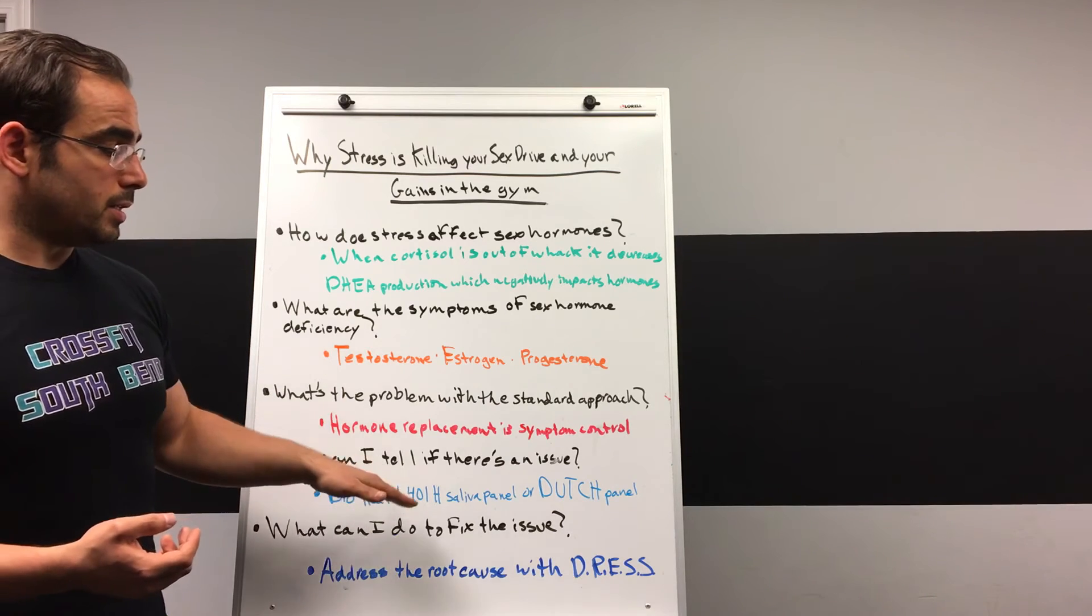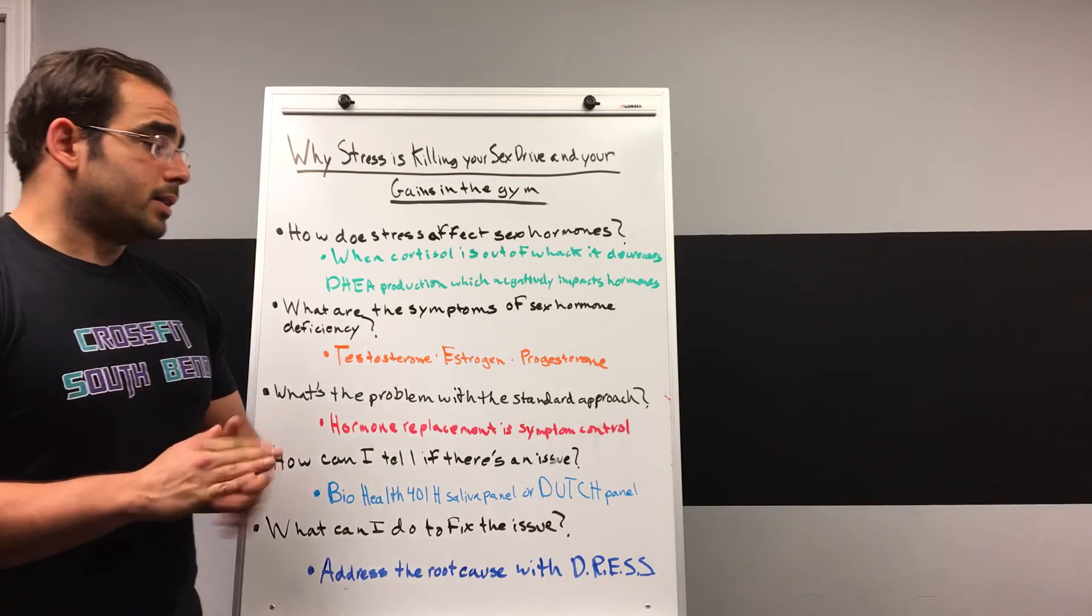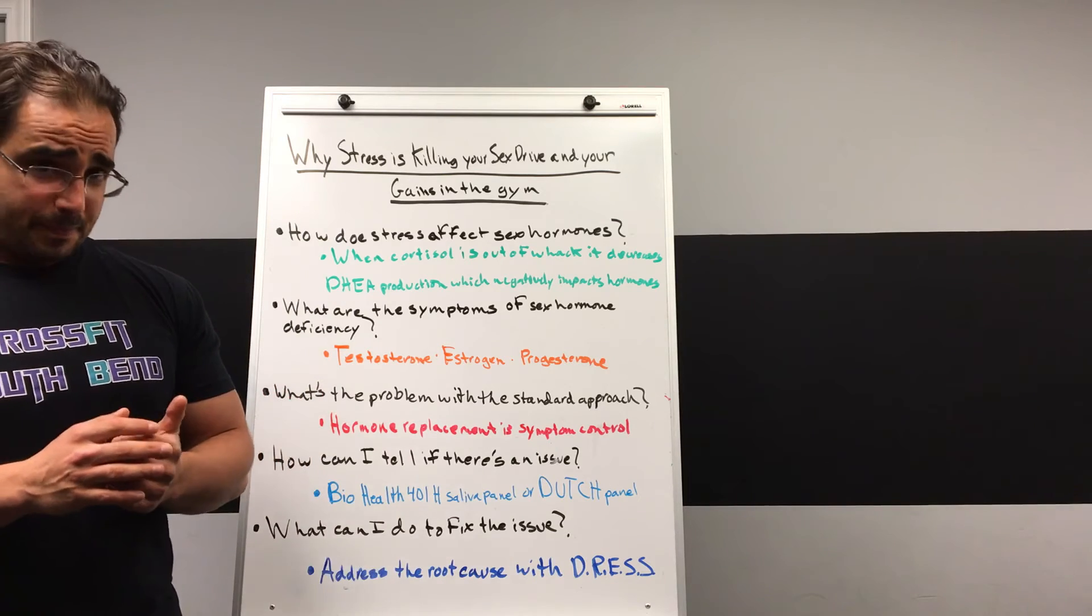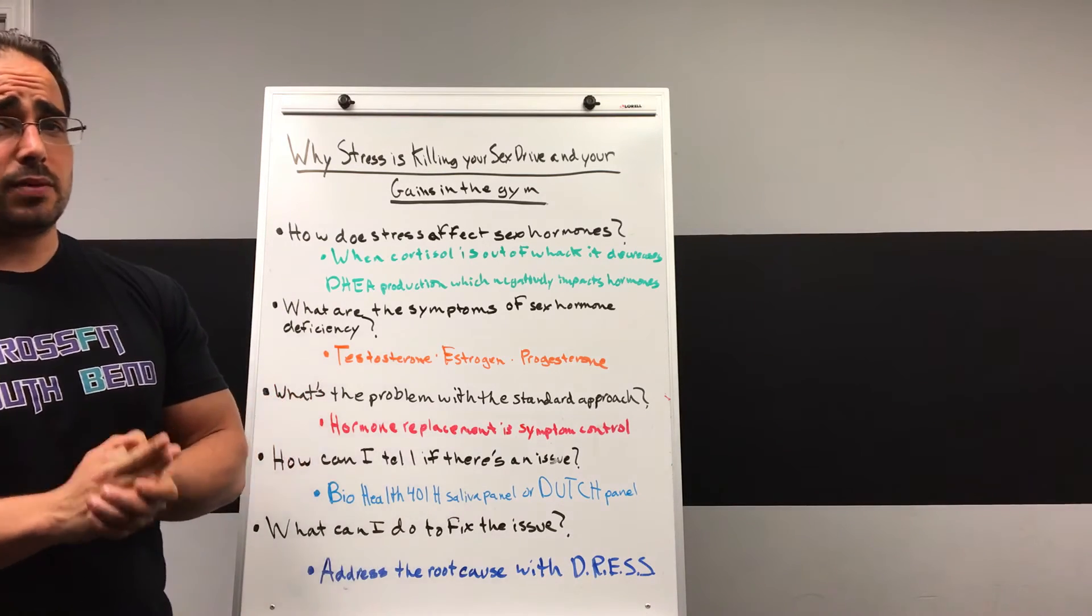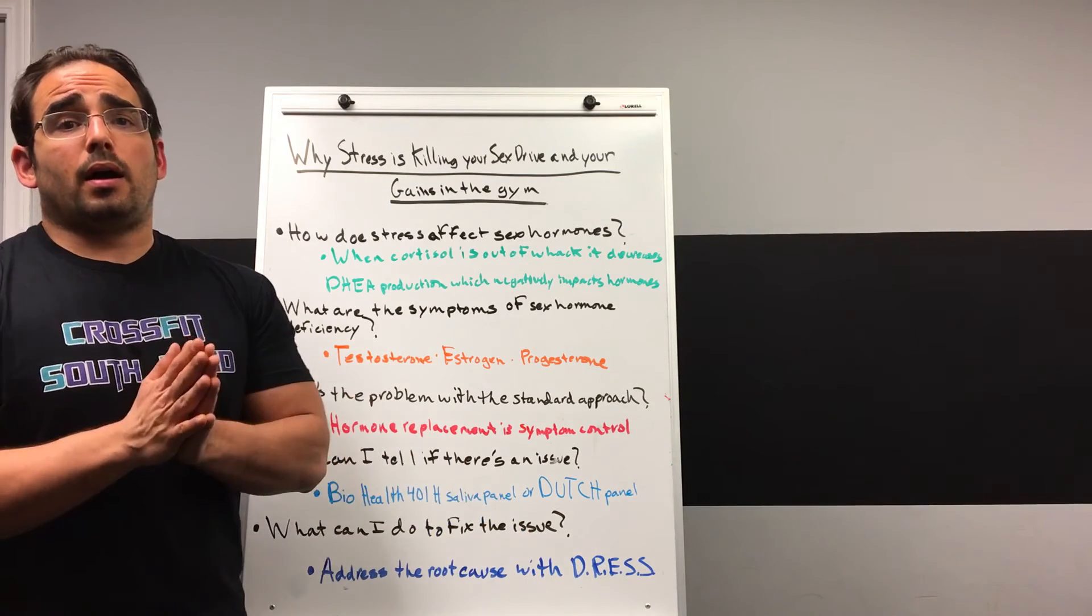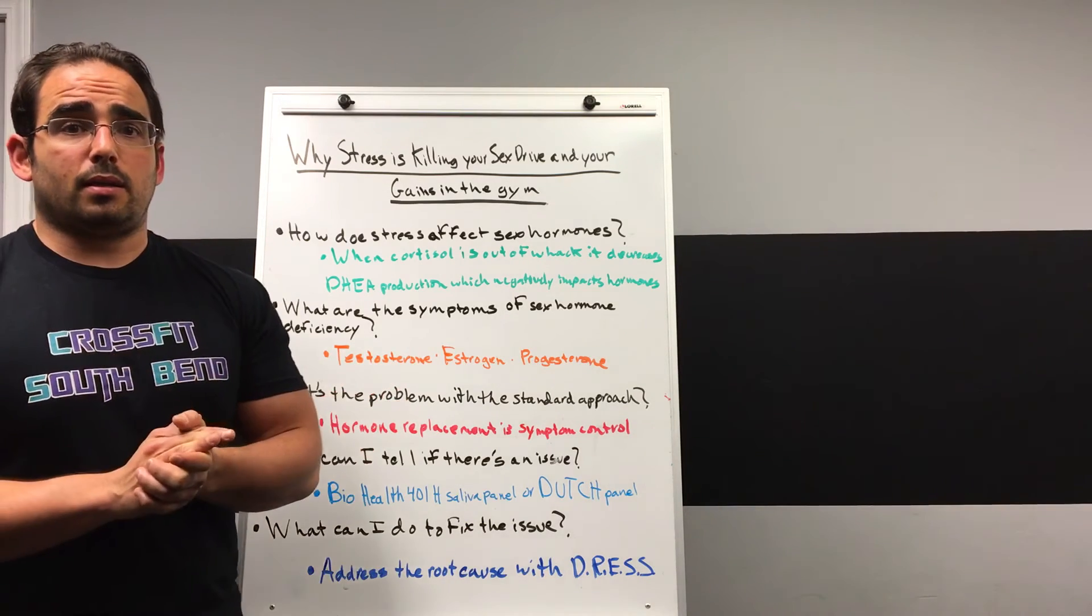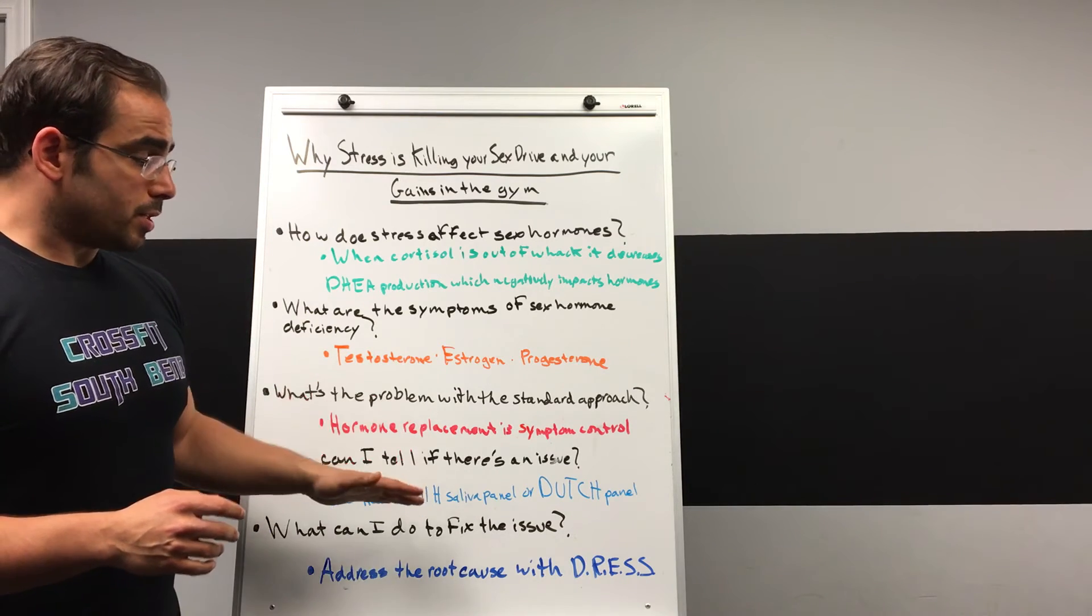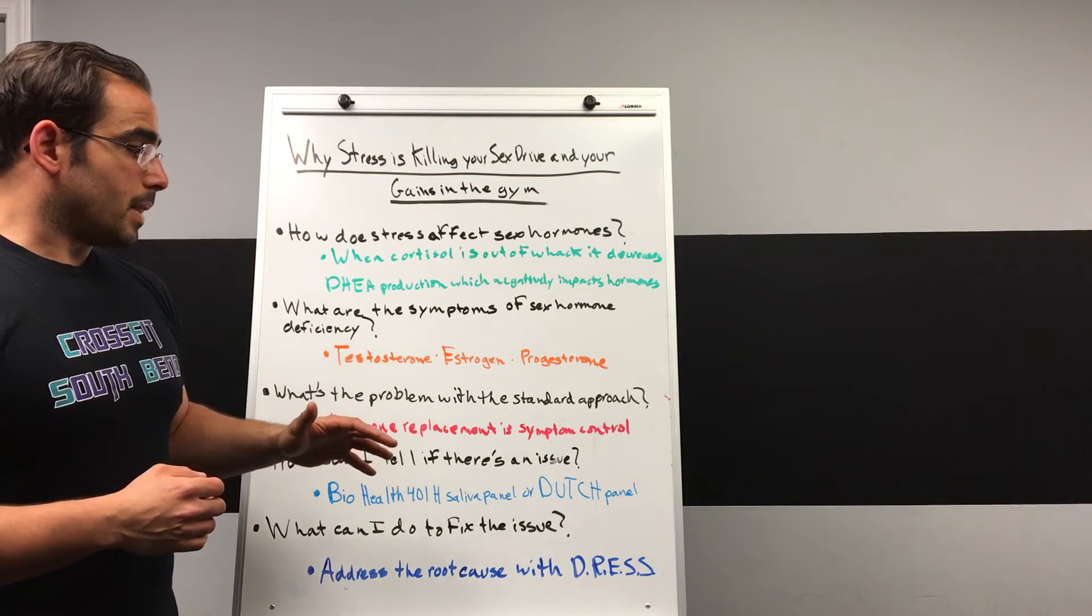The BioHealth is a very good test to run. It's just saliva-based. It's not terribly expensive. The Dutch Panel is a much, much better test to run. It's got a little bit more complicated information in it, but it gives you a much better sense of what's actually going on with the hormones. We can run both of these tests here through our Functional Diagnostic Nutrition Program. And we do it just at the cost of what the lab charges to run the test. If that's something you're interested in, you can certainly pursue that with us here.